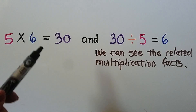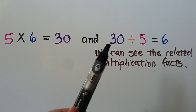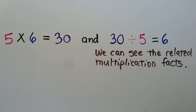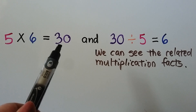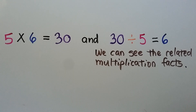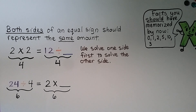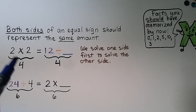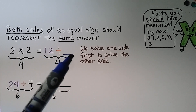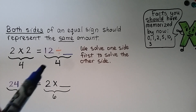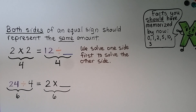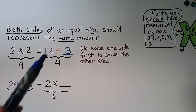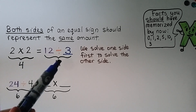Here we have five times six is equal to thirty, and thirty divided by five is equal to six. We can see the related multiplication facts — we have a five, a six, and a thirty in both equations. We know both sides of an equal sign should represent the same amount. If we see two times two is equal to twelve divided by something, we solve one side first. Two times two is equal to four, so twelve divided by some number is equal to four. Twelve divided by four is equal to three, and three times four is equal to twelve. Both sides of the equal sign are equal to four.